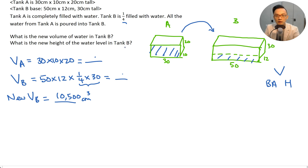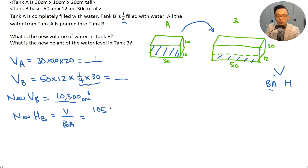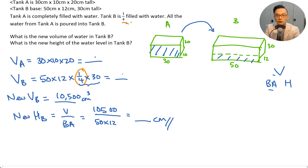What's the new height of the water level in B? Height equals volume divided by base area. New height of B equals 10,500 divided by base area of 50 times 12, which gives the answer in cm. The tricky part is that one quarter filled means you take one quarter times the height. Find the original volume of A, add it to get the new volume of B, then divide by base area to get the new height.